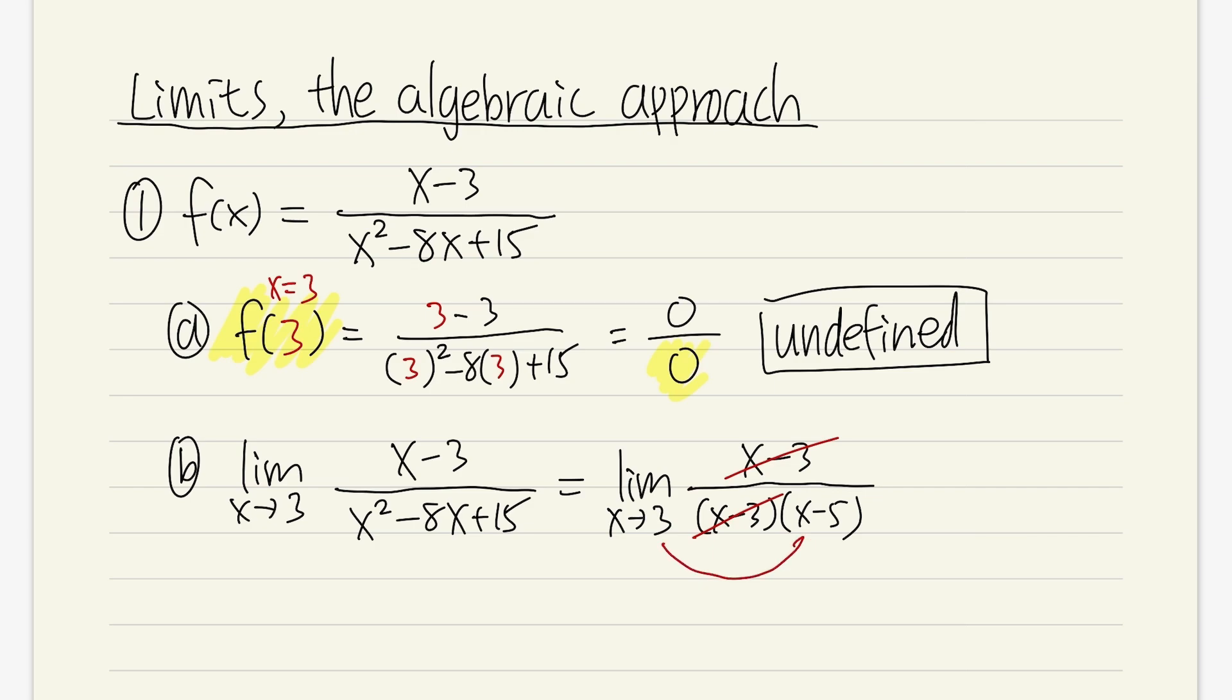Because remember, when we are doing limit, x is not exactly equal to 3. We're just approaching 3 from the right-hand side or from the left-hand side. So we don't really care about exactly 3. But once you cancel out the 0 over 0 case, plug in straight into the rest.